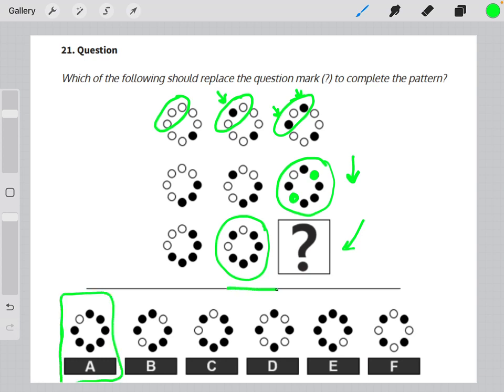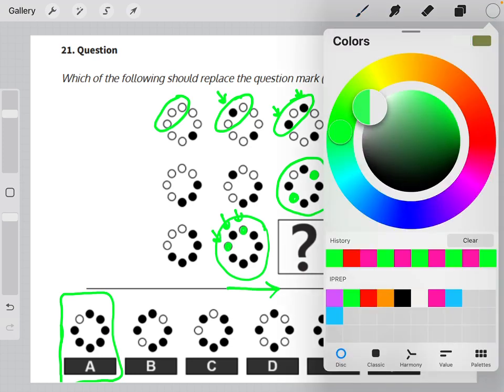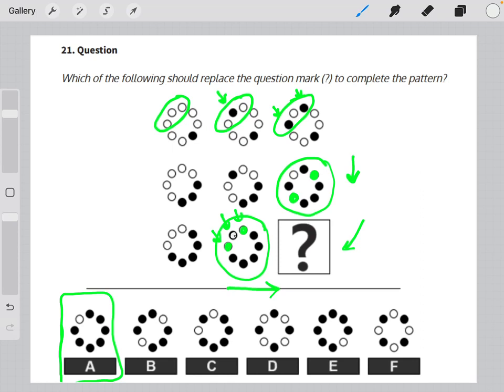If we were to start here, we would need to alternate the pattern of these top three beads so that it would give us - this bead would shade in, this bead would shade in, and then this bead would be unshaded, which would still give us answer choice A.